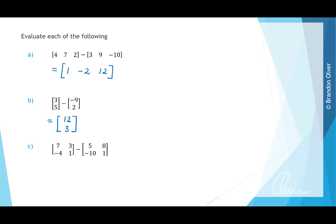For part C, both are 2 by 2 square matrices, so subtraction is defined. Finding the difference of each corresponding term: 7 minus 5 is 2; 3 minus 8 is negative 5; negative 4 minus negative 10 is negative 4 plus 10, which is positive 6; and 1 minus 1 is 0. That is the resultant matrix.